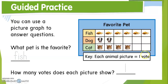As we talked before, the picture graph has a topic at the top and the kinds on the left. Here they are telling us we have three kinds of favorite pets: fish, dogs, and cats. To count how many fishes we have, we count each fish by one — one, two, three, four, five, six — so we have six fishes. For the dog we have two, and for the cats we count one, two, three, four. Each animal picture equals one vote.